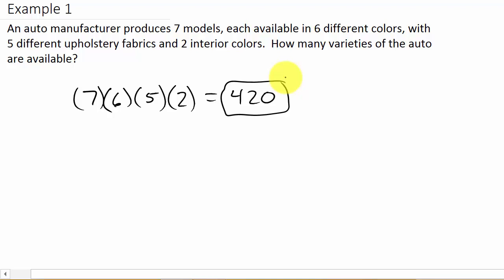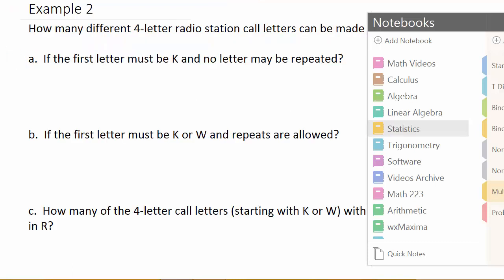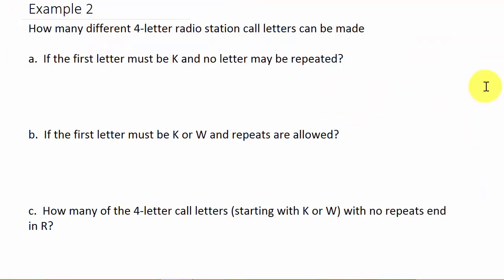It's just the number of ways for each choice multiplied together. Now let's look at the next example — it's a little more complicated, but not difficult. How many different four-letter radio station call letters can be made? There are three different parts to this problem.